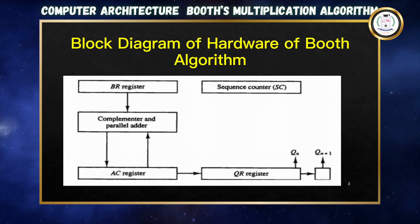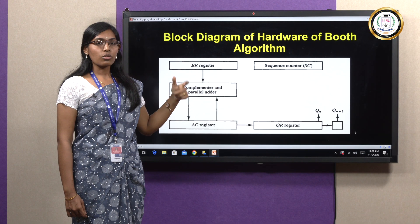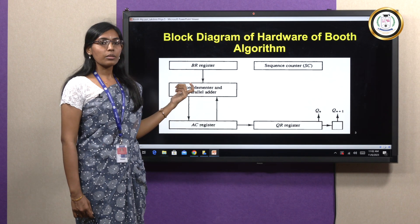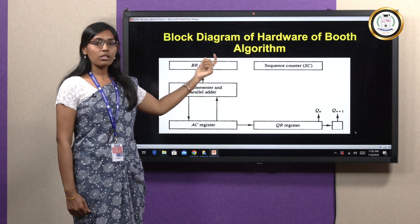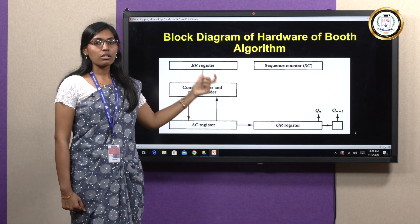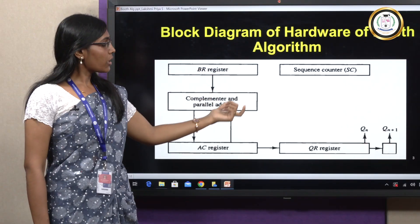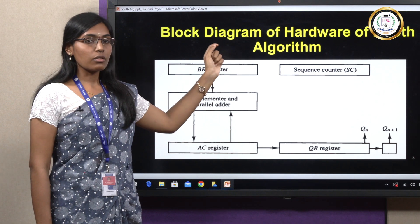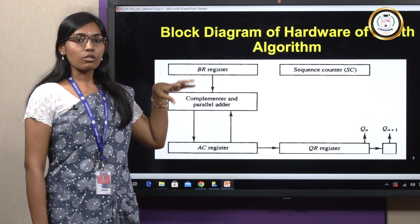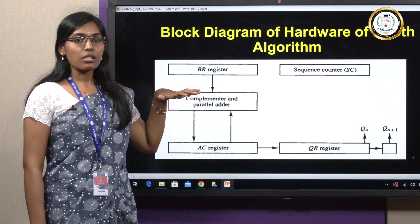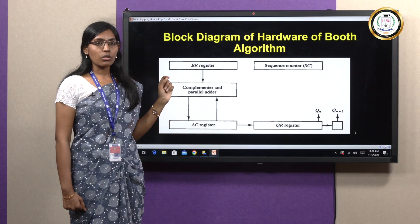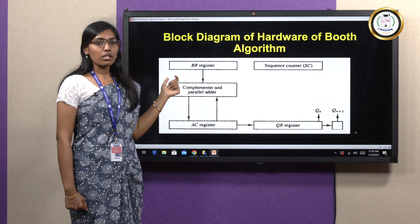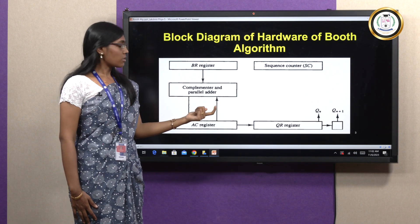The last bit of the multiplier register along with QN+1 is used to calculate values and perform the arithmetic shift operation. The sequence counter holds the number of bits in the QR and BR registers — assigned as 4 for 4-bit registers, or 5 for 5-bit. The AC register is initially assigned to 0, based on the number of bits in the QR and BR registers.